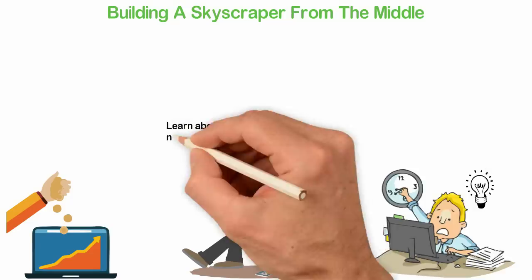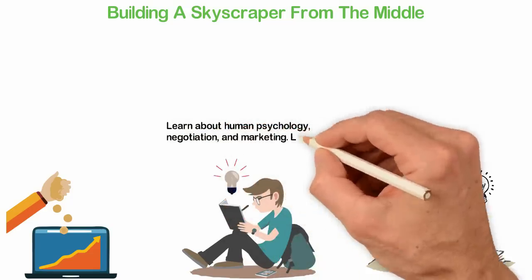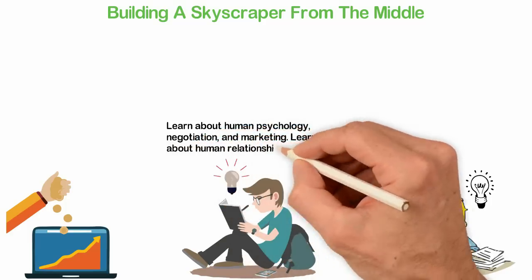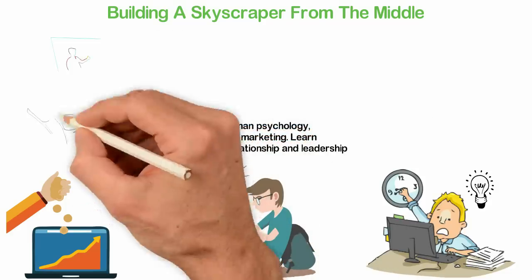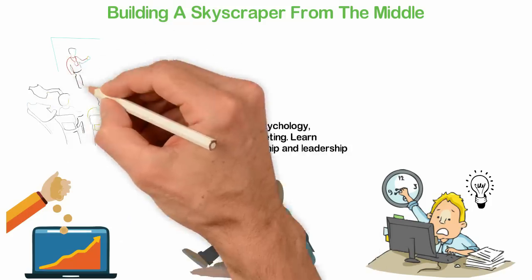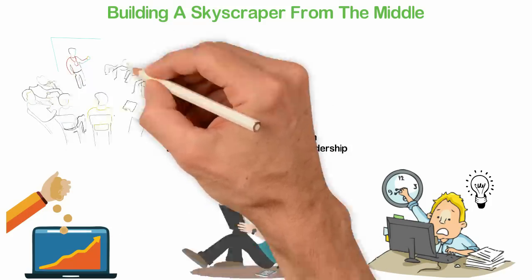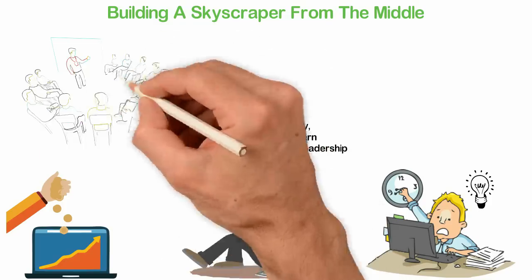Learn about human psychology, negotiation and marketing. Learn about human relationship and leadership. If you don't know books you should read on these subjects, search Google for best books on any one of these.